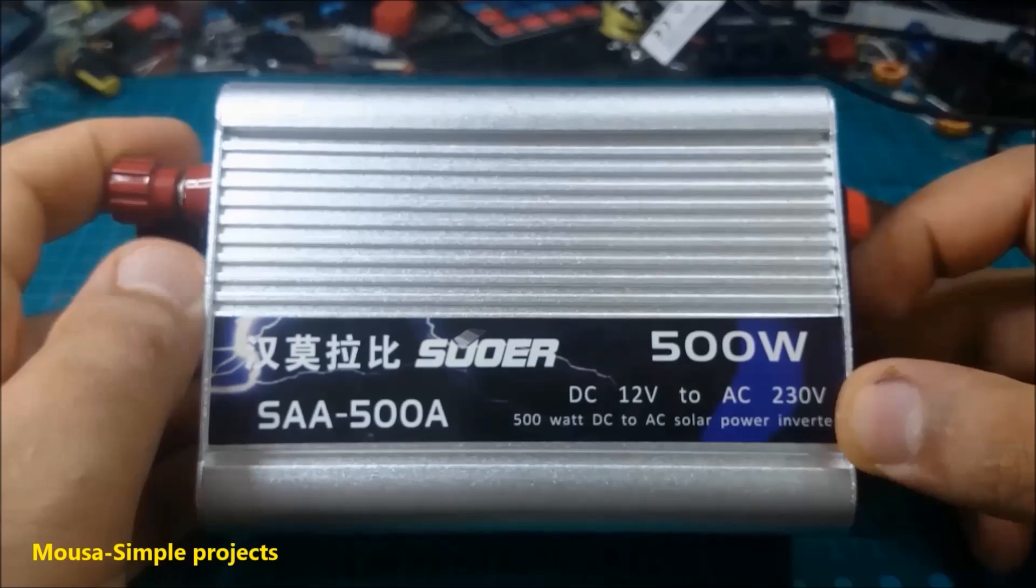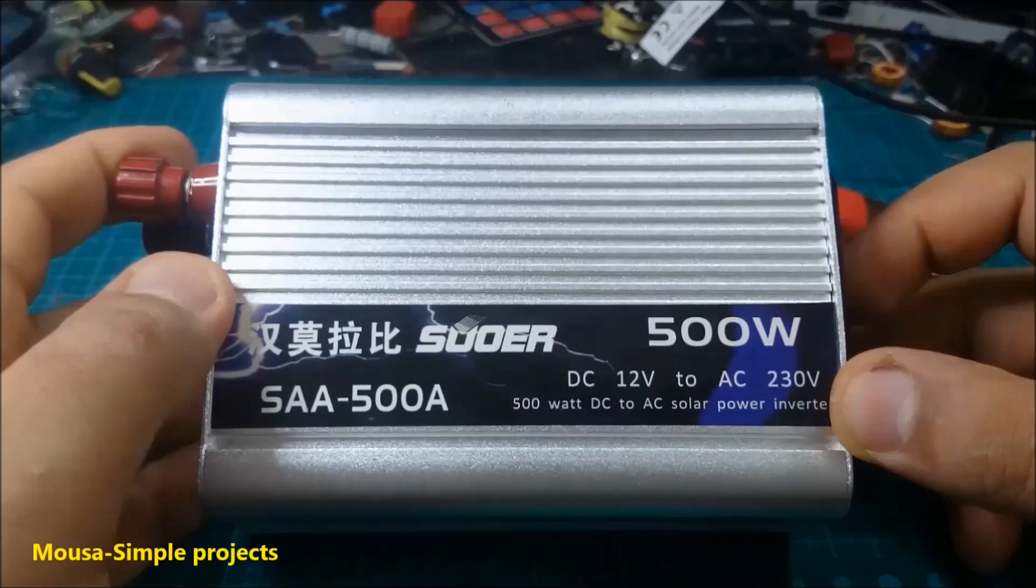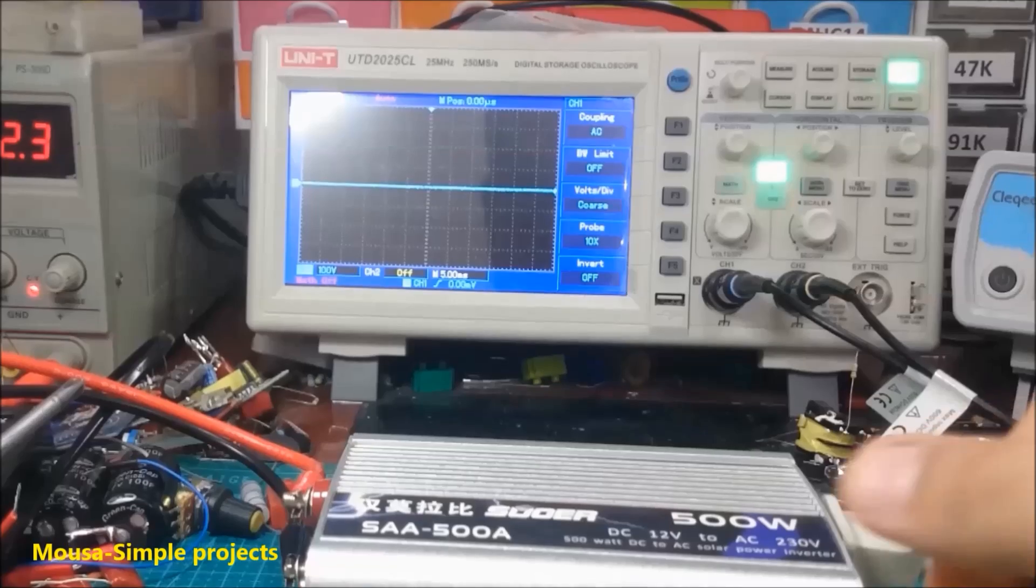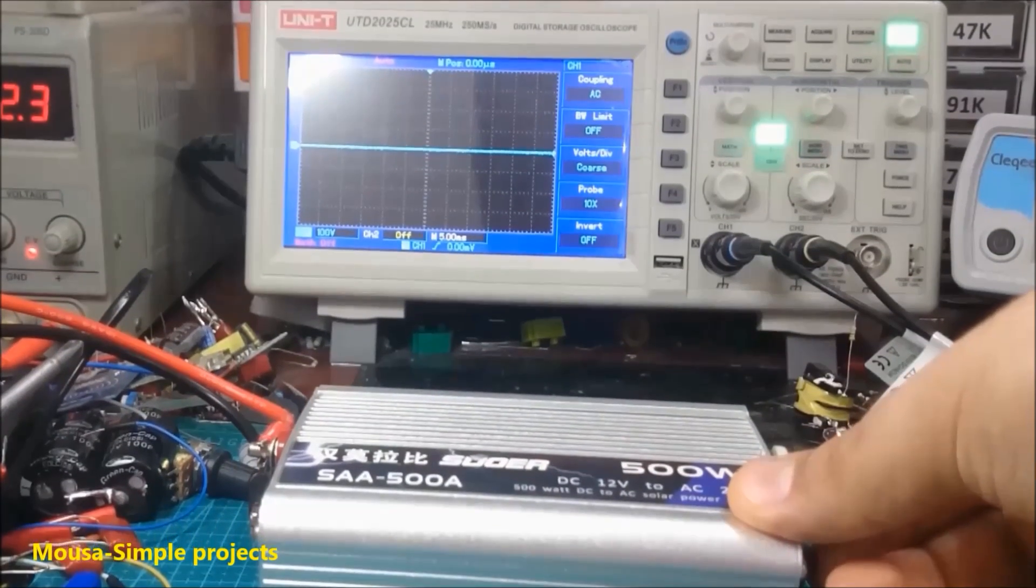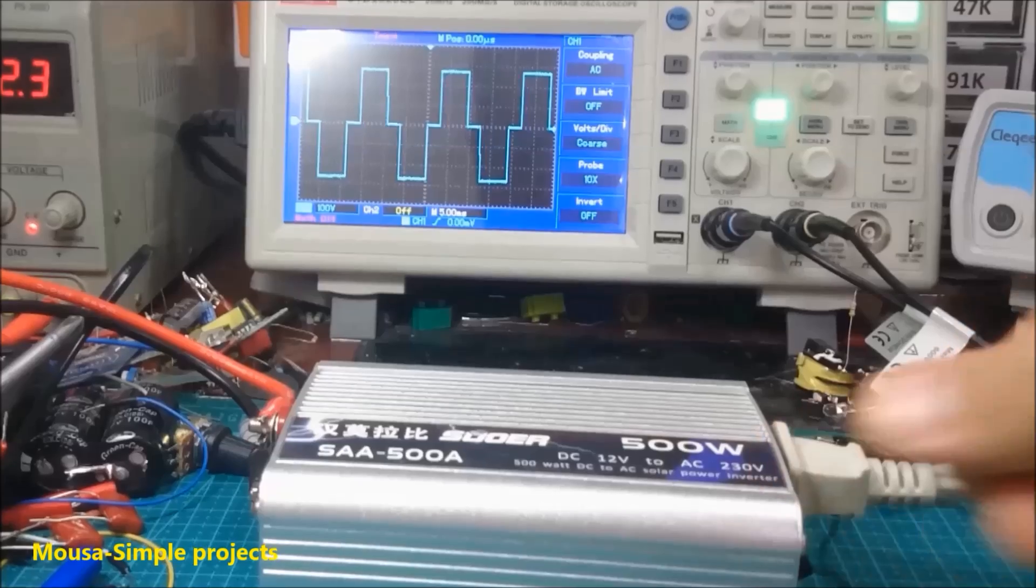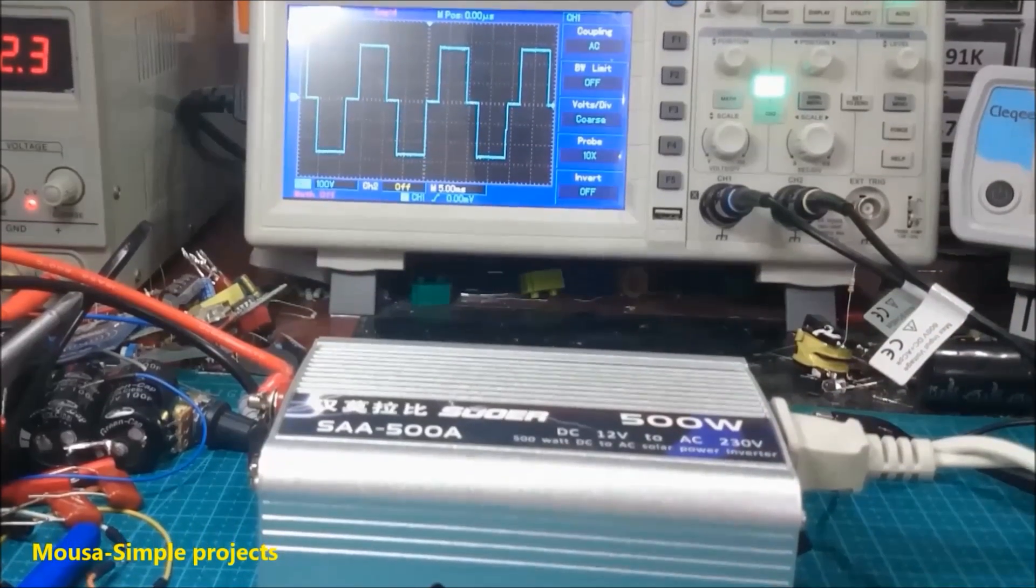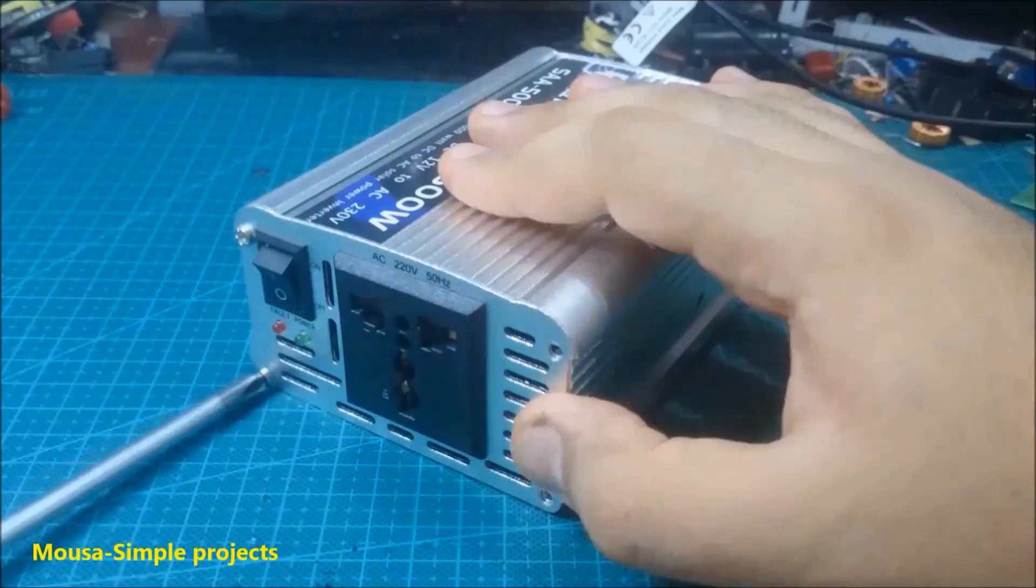Here I have this cheap Chinese 500 watt inverter. As you can see, the output waveform is modified square wave, not pure sine wave. Let's open it.